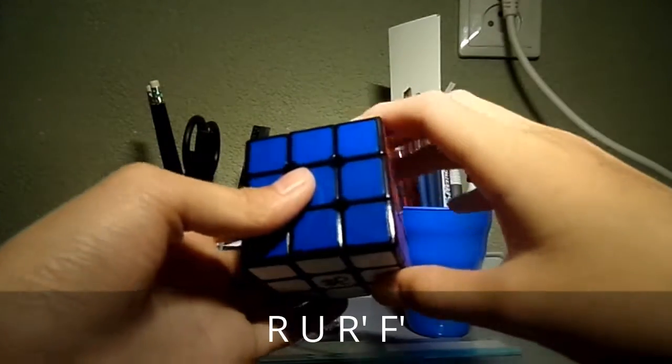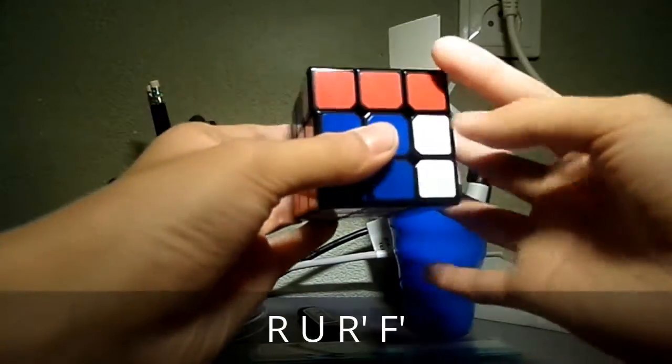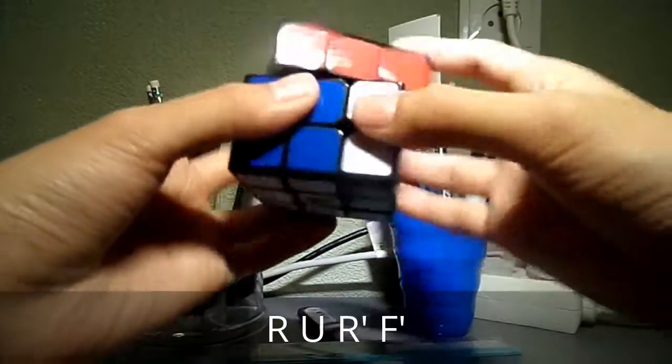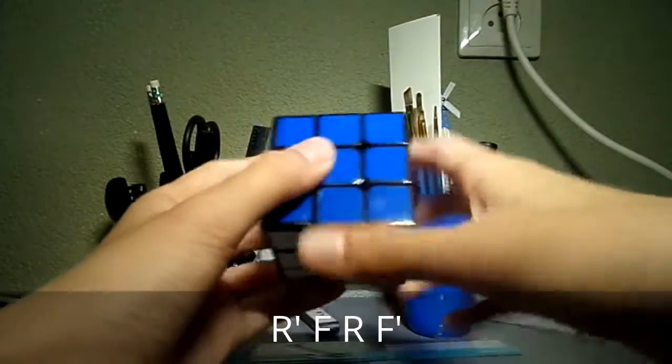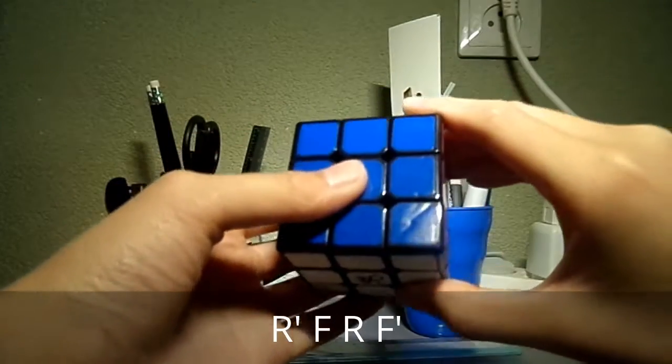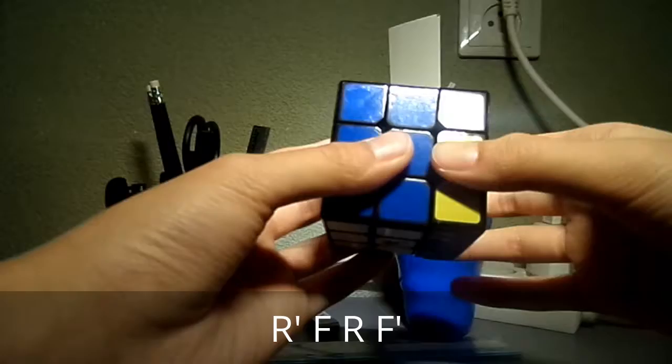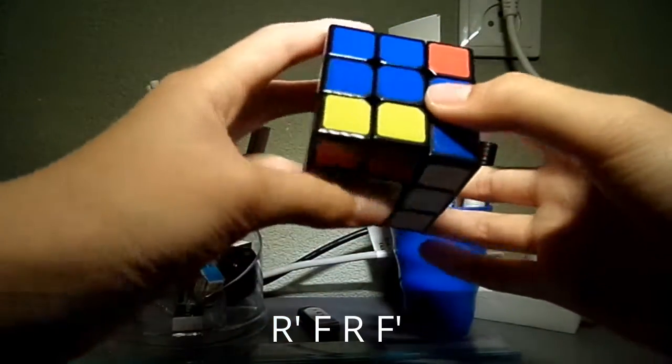So this one, it's quite weird, I don't know why, it's R U R prime F prime. I don't know how else I'm going to use it, but it's still a trigger. And the other one is, the last but not least one is R prime F R F prime.